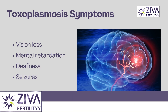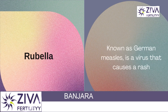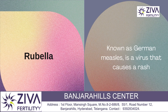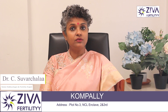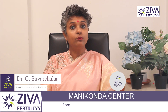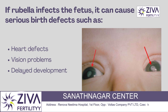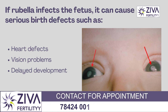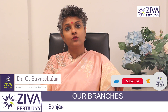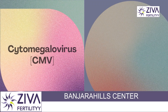Symptoms which occur later in life can include vision loss, mental retardation, deafness, and seizures — these are the complications coming from this disease. Next is Rubella, also known as German measles, which is a virus that causes a rash. The side effects of this virus are minor in children; however, if rubella infects the fetus, it can cause serious birth defects.